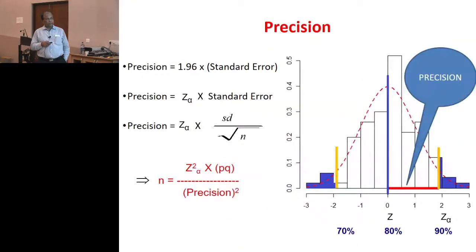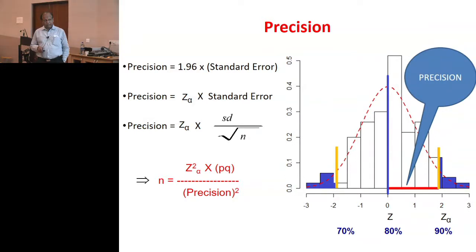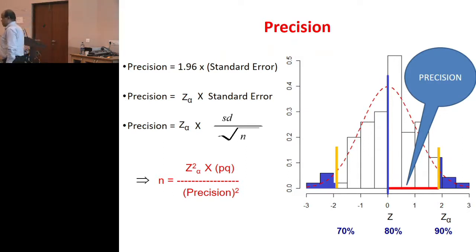This is the standard error formula. Now, what do we mean by precision? Precision is the minus two standard error to plus two standard error range. If my sensitivity is 80% and I phrase my precision as 10%, then the range is 70% to 90%. This 10% is called the precision of the estimate.